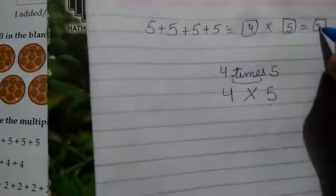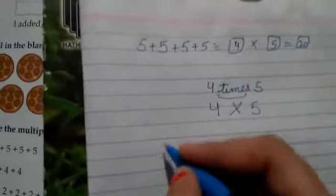So how we will do it? 4 multiply 5 equals to 20. So the answer will be 4 fives are 20.